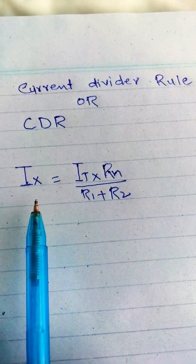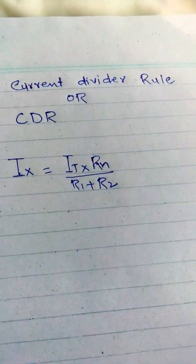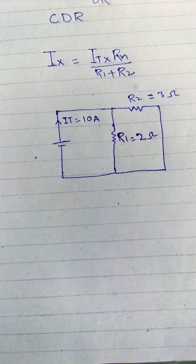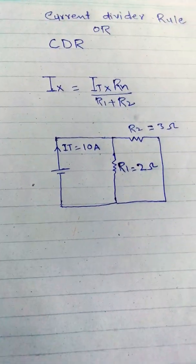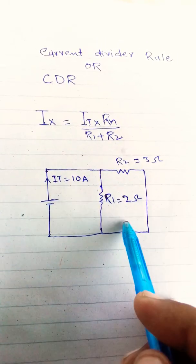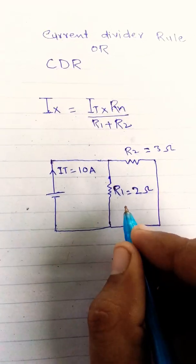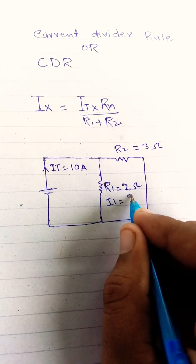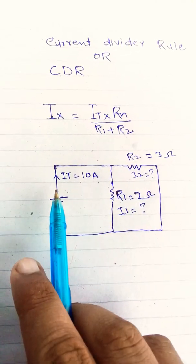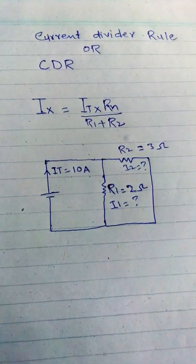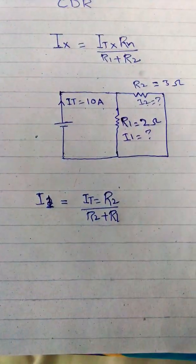Now we write the formula of the current divider rule, then make a simple circuit and solve. In this circuit, total current is given, R1 is given, and R2 is given, but voltage is not given. If we want to find i1 and i2, we use CDR and apply it to find i1 and i2.